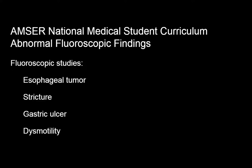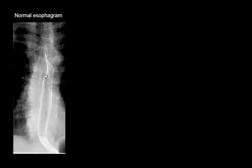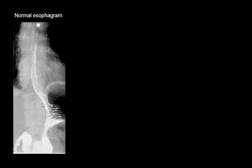My name is Dr. Nellie Tan and we're going to review some abnormal fluoroscopic studies. This is an example of a normal esophagram — the patient swallows barium, and this is a double contrast area in barium. We see normal caliber as well as function of the esophagus.